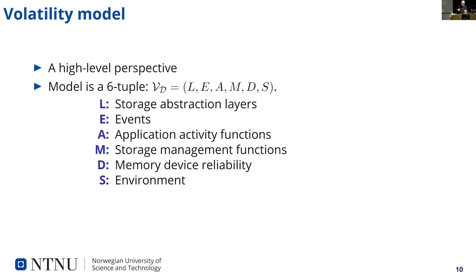The volatility model we use is described in our paper 'Towards a Generic Approach of Quantifying Evidence Volatility in Resource Constrained Devices' from last year. This is the high-level perspective of the model, defined as a six-tuple. The first part covers the storage abstraction layers — the different ways data is encoded across abstraction layers. For example, the physical storage of data as charges on a chip can look quite different from the quasi-physical layer as read through the flash translation layer. Data can be readable from the operating system but unreadable when stored encrypted on a physical medium.